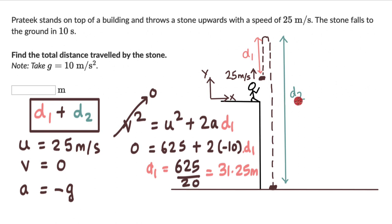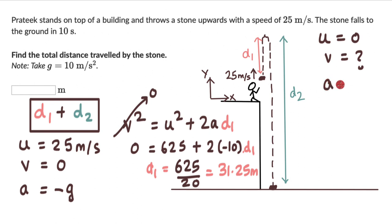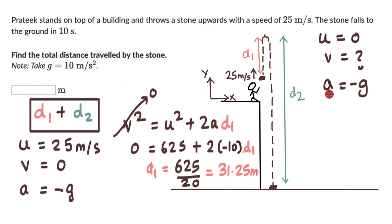Now for the second part of the motion, let's list the variables. The initial velocity is 0, since we start from the topmost point. Final velocity is unknown. Acceleration is still minus 10 meters per second square, pointing downward in the negative y direction. We only know two variables, so we can't use an equation of motion yet to find D2.